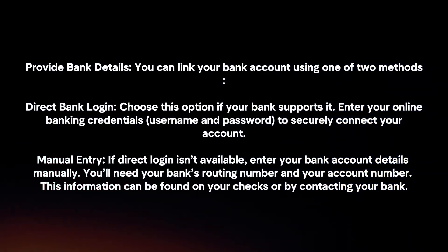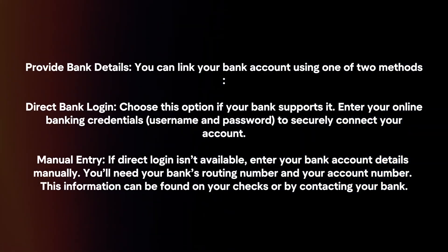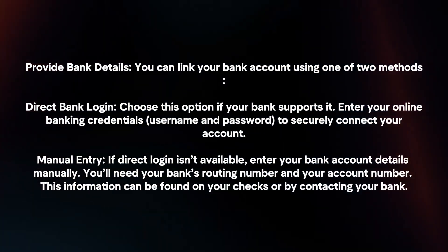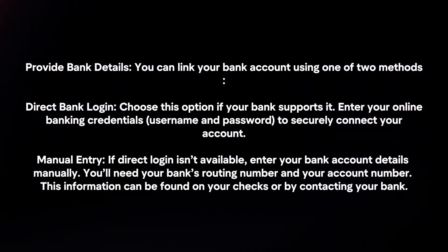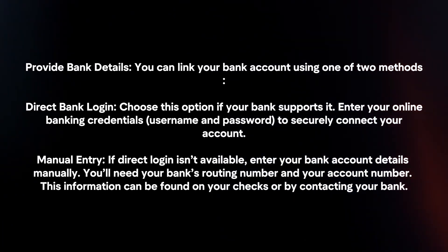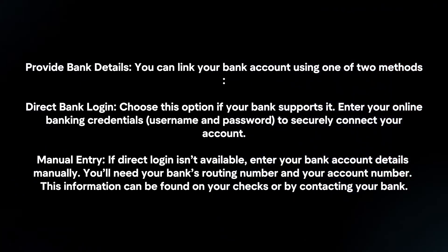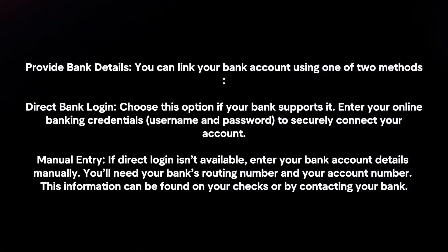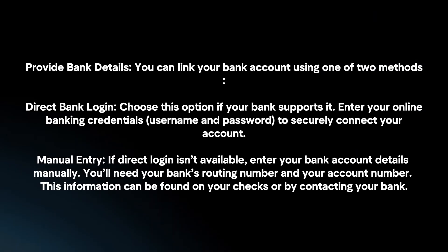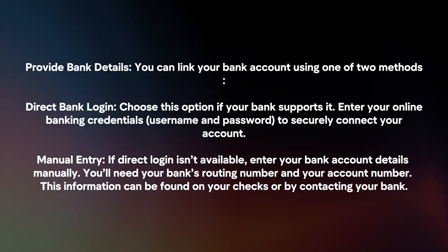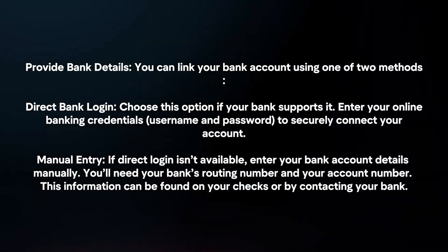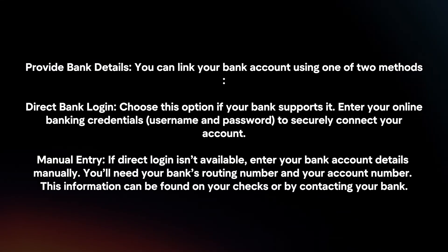Provide bank details. You can link your bank account using one of two methods. Direct bank login: choose this option if your bank supports it, and enter your online banking credentials to securely connect your account. Manual entry: if direct login isn't available, enter your bank account details manually. You will need your bank's routing number and your account number. This information can be found on your checks or by contacting your bank.